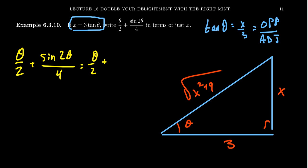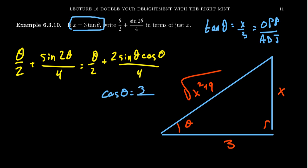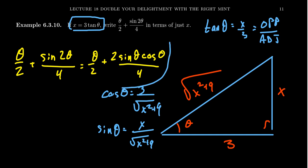So theta over 2 plus sine of 2 theta over 4 equals theta over 2 plus 2 sine theta cosine theta over 4. We need to compute sine of theta and cosine of theta from our triangle. Cosine of theta is adjacent over hypotenuse, which equals 3 over the square root of x squared plus 9. Sine of theta is the opposite over the hypotenuse, giving us x over the square root of x squared plus 9.